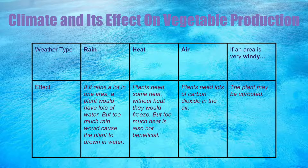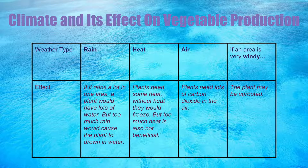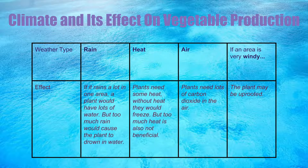Heat: plants need some heat. If it is too cold, they will freeze. However, too much heat would not be beneficial. Air: plants need lots of carbon dioxide in the air for many things such as photosynthesis. Wind: if an area is windy, the plant may be uprooted if it is very windy, which would obviously not be good.